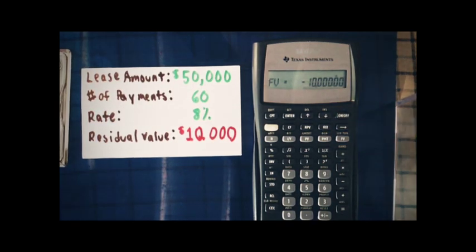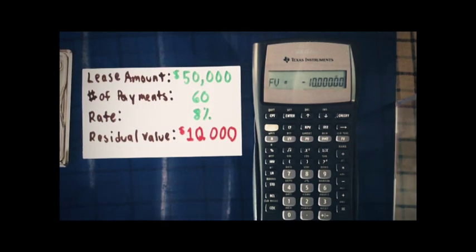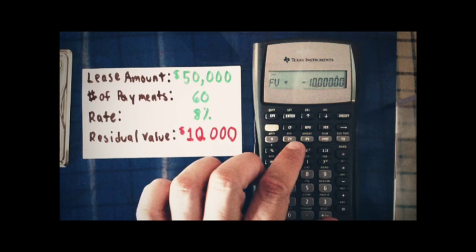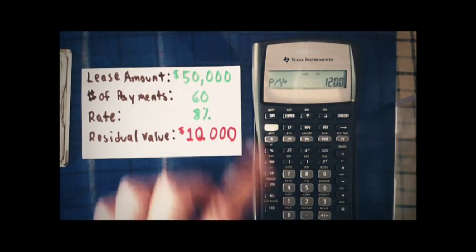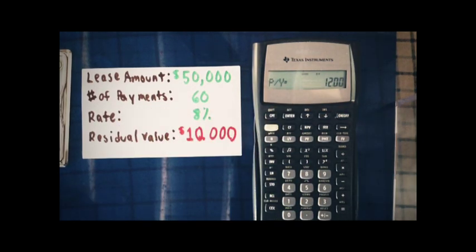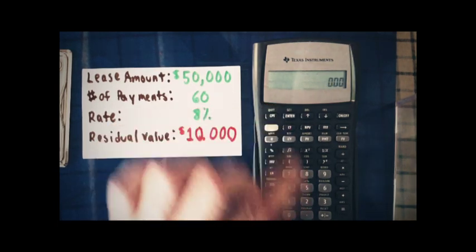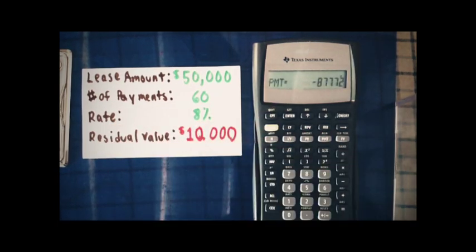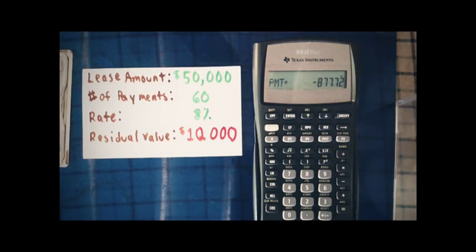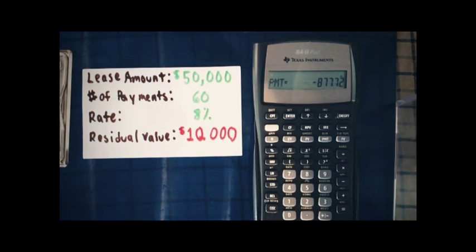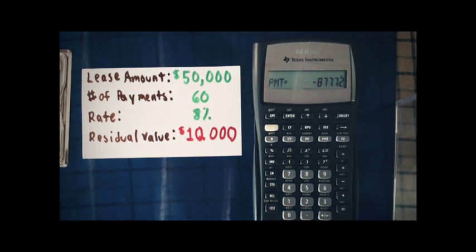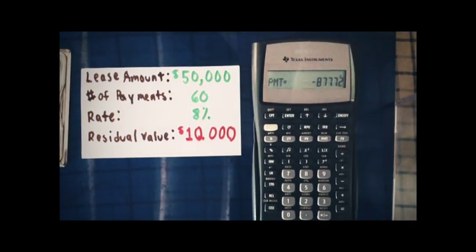Before I calculate payment, I want to check the P/Y, or payments per year, register, and we want to make sure that's set to 12 because we are dealing with monthly payments. Computing payment, it turns out that our monthly payment is going to be $877.72. That's the required payment for 60 months at 8%, taking the value of the equipment from $50,000 down to $10,000.